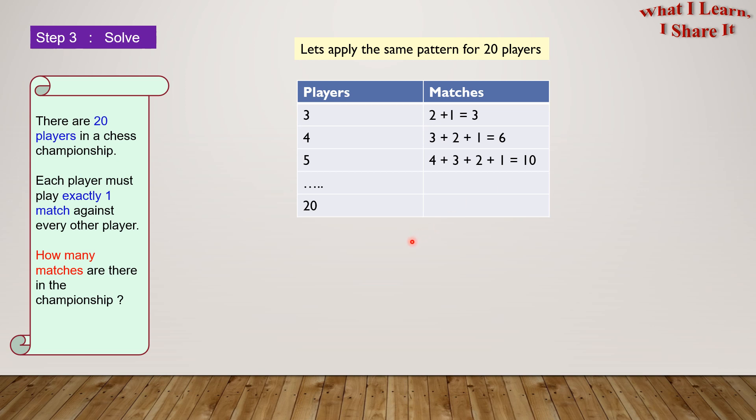Let's apply the same pattern for 20 players. So for the 20 players, it would be 19 plus 18 plus all the numbers until plus 1.